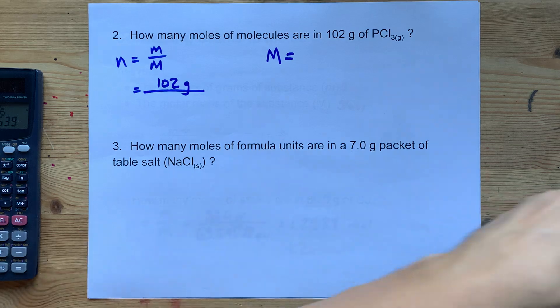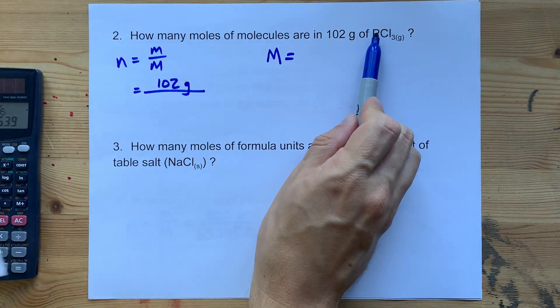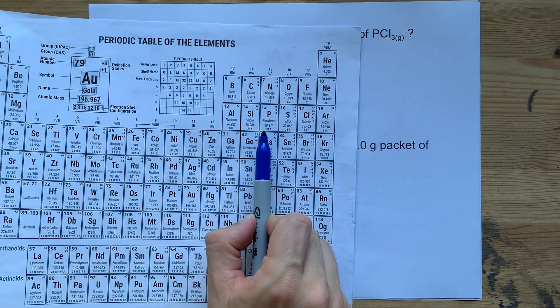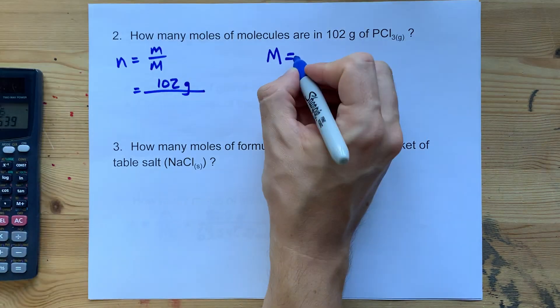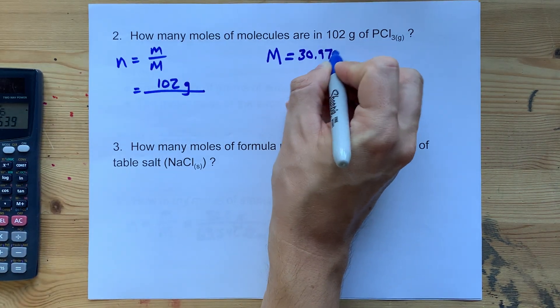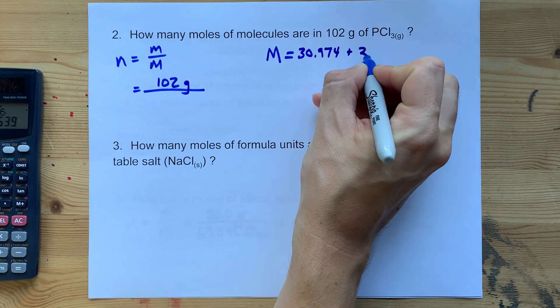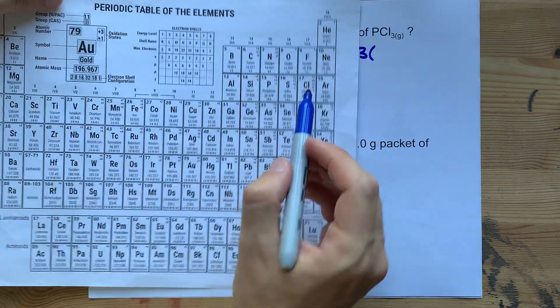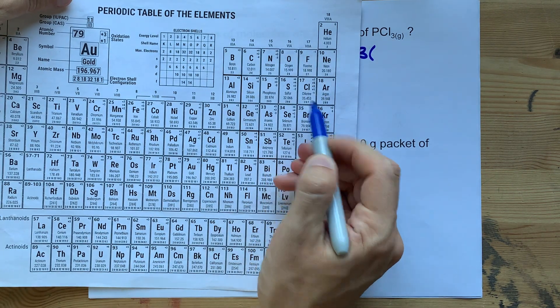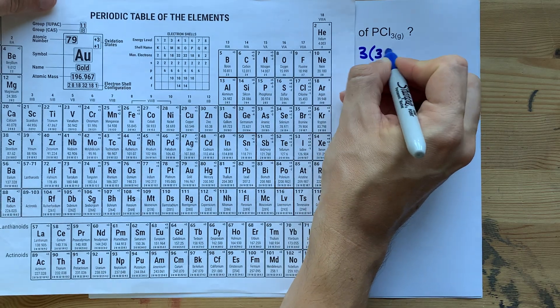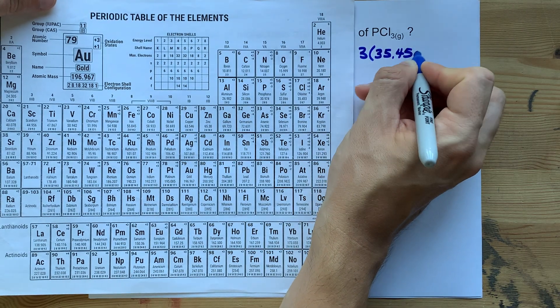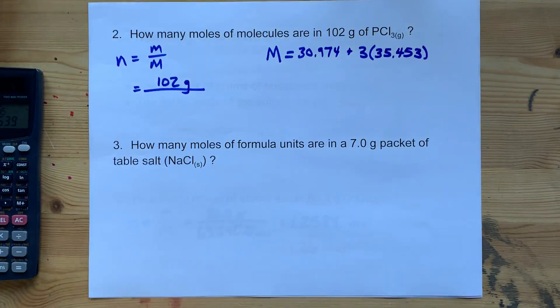Now that's actually tougher because there's more than one atom there. It's made of a phosphorus, 30.974 for me, and you're going to add three chlorines. Each of those chlorines weighs 35.453. Use as many decimal places as the periodic table your teacher gave you.